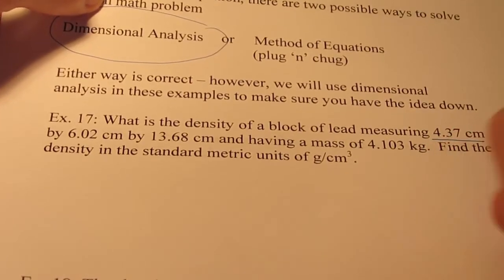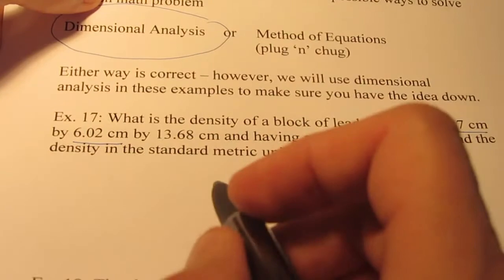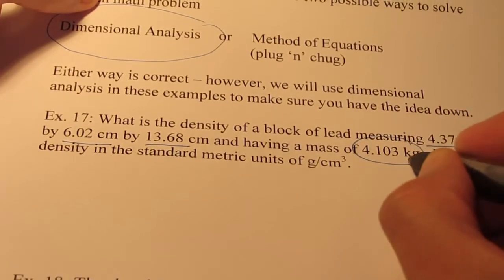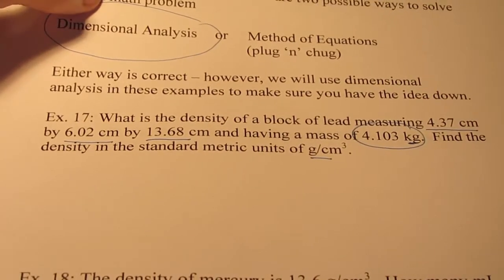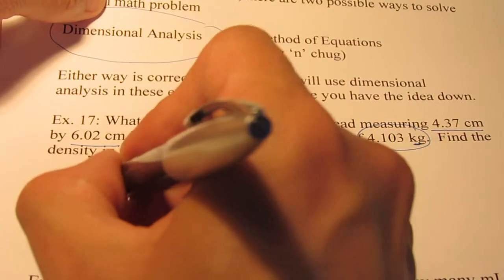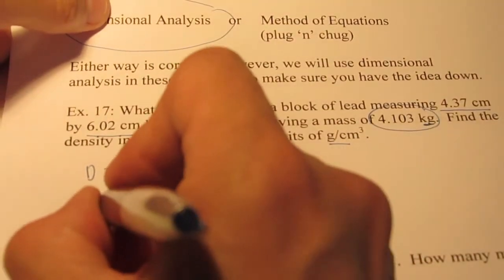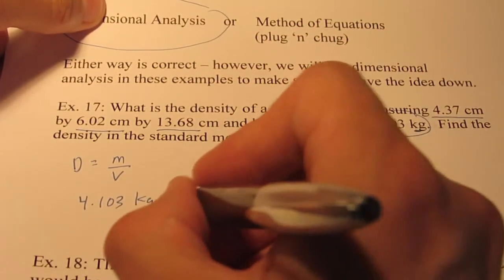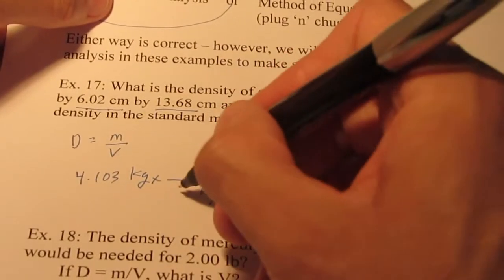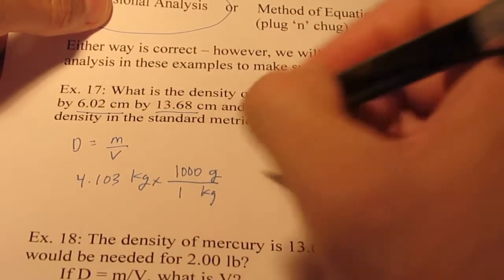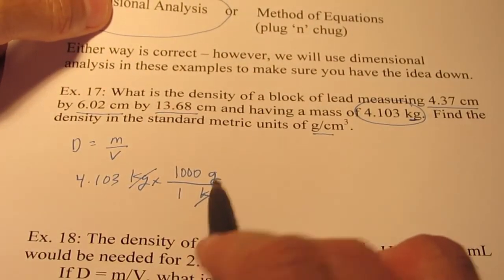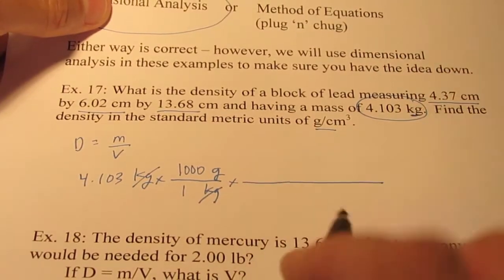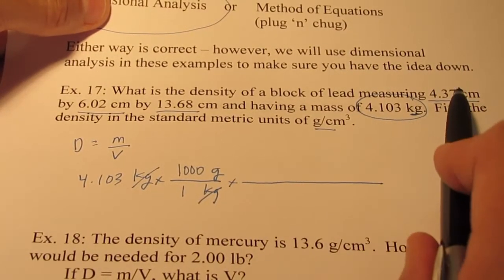Let's take a block of lead. It has a length of 4.37 centimeters, a height of 6.02 centimeters, and a depth of 13.68 centimeters, and the mass is 4.103 kilograms. Find the density in grams per cubic centimeter. Density is mass divided by volume. My mass is 4.103 kilograms. I'm going to hop out of kilograms and get into grams. There are a thousand grams in a kilogram.